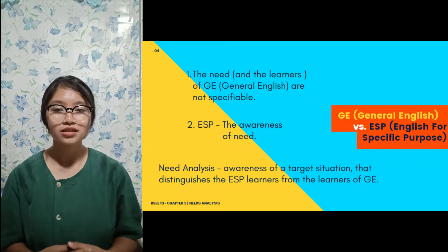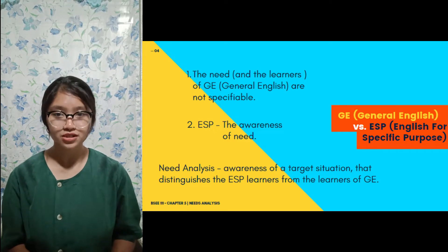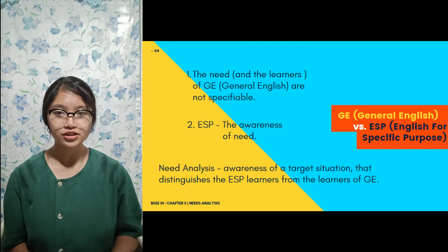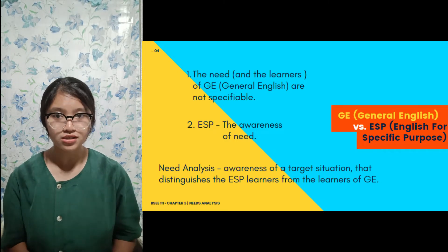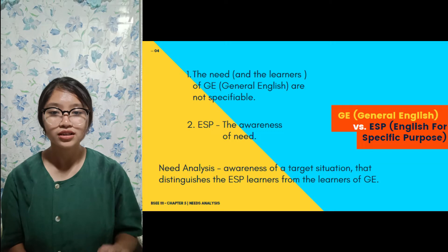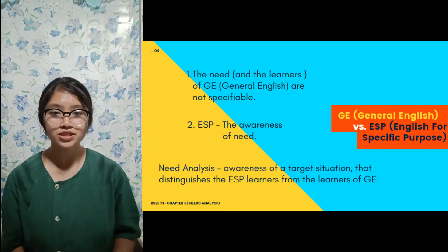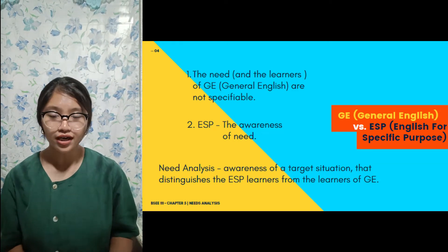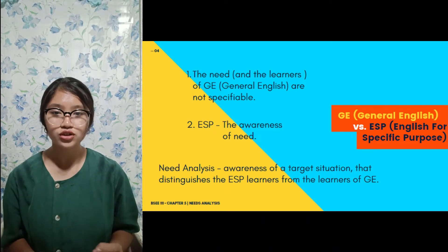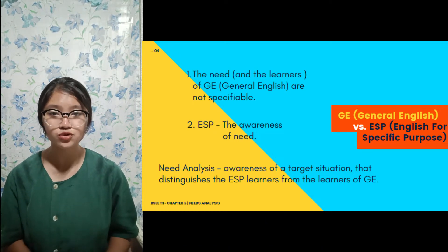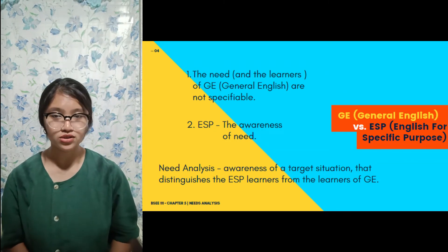The first thing we will discuss is the difference between general English and English for Specific Purposes. In general English, the needs of learners are not specifically met for students' difficulties — it caters to the needs of the majority, not focusing on a specific strategy for a specific scope of learners. English for Specific Purposes, on the other hand, particularly caters to the needs of each learner through distinct strategy among a specific scope of learners.